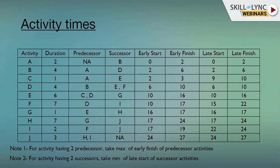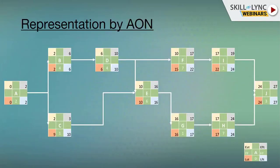This is a comprehensive summary of the activity types; you can carry on the exercise yourself. I'll be discussing a few more important concepts used in developing a schedule. I have also represented the network in an activity-on-node format, where yellow represents early start, blue represents early finish, a greenish color represents late start, and light blue shows late finish. The number in green is the duration of the activity.